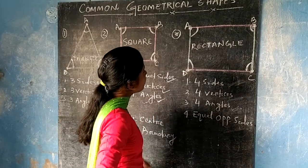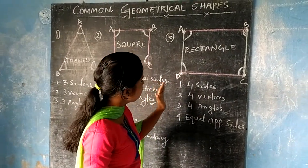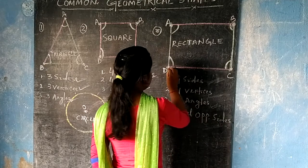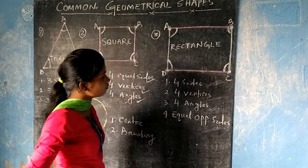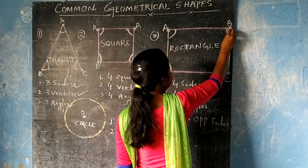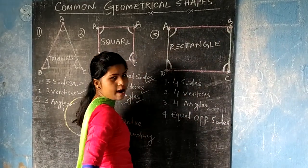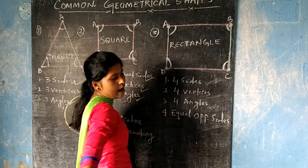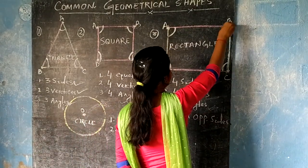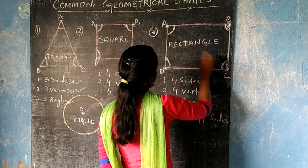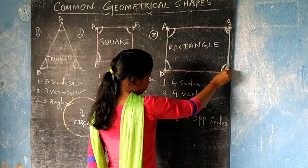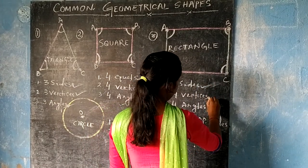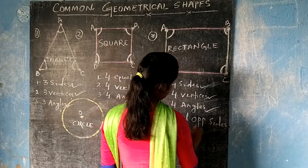Look at the next figure. It is a geometrical shape. It has four sides: A, B, C and D. And it has four angles: A, B, C and D. And opposite sides are equal — AB is equal to DC, and AD is equal to BC. So it is called a rectangle. It has four sides, four vertices, four angles and the opposite sides are equal.